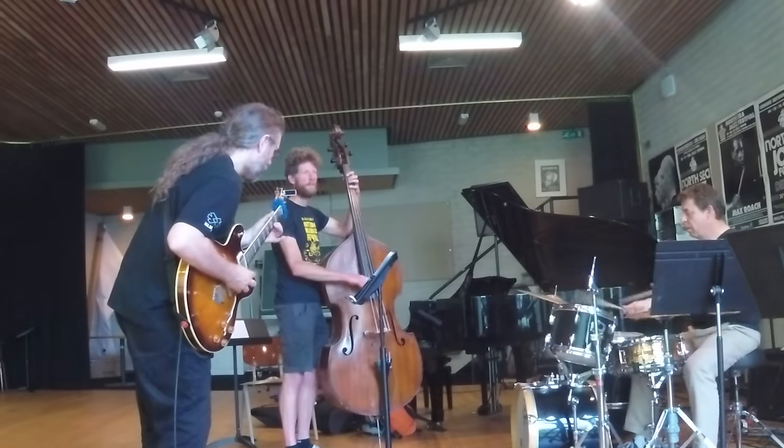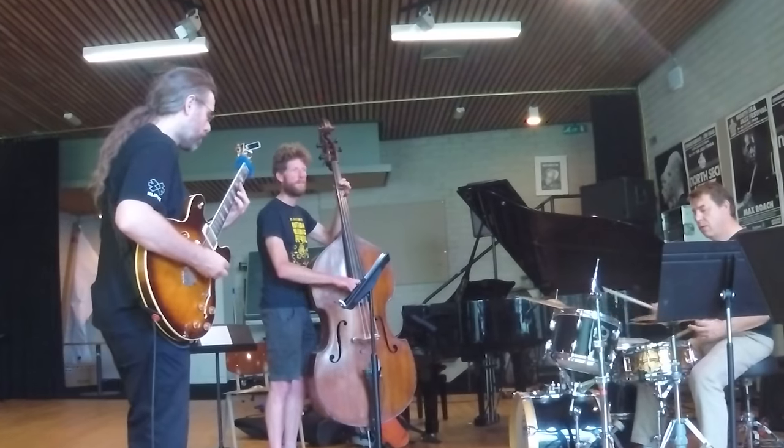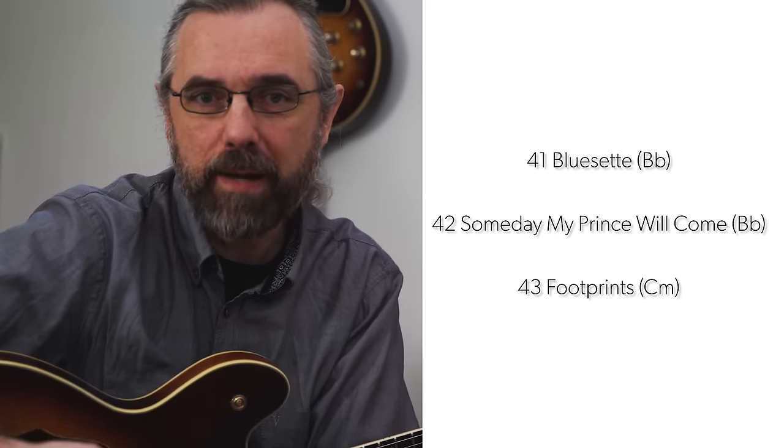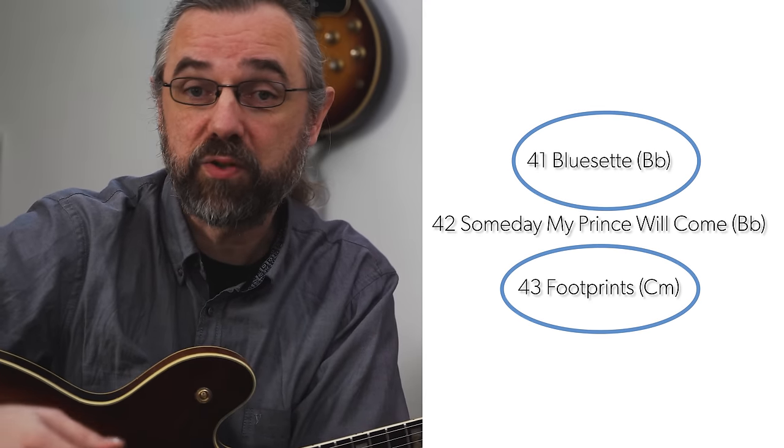Jazz isn't only in 4/4, so it's important to also have tunes in other meters. Waltzes are a great place to start — just a basic 3/4 — but later you also want to play 6/8, 5/4, and 7/4, and be able to take standards usually in 4/4 and move them to those meters. Common 3/4 tunes to check out would be Bluesette, Someday My Prince Will Come, or Footprints. Interestingly, two of those are based on the 12-bar blues, even though they're very different compositions — one is bebop, the other more modal.